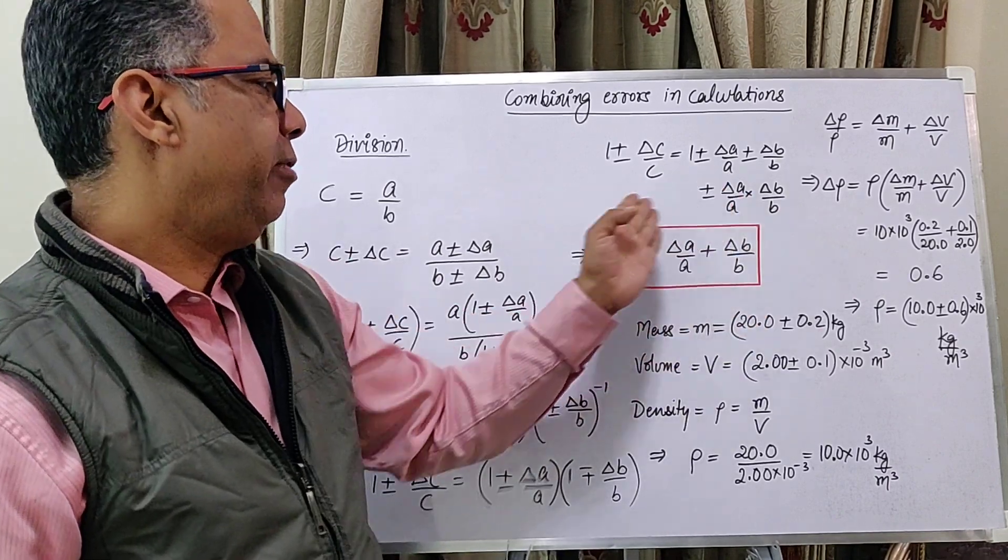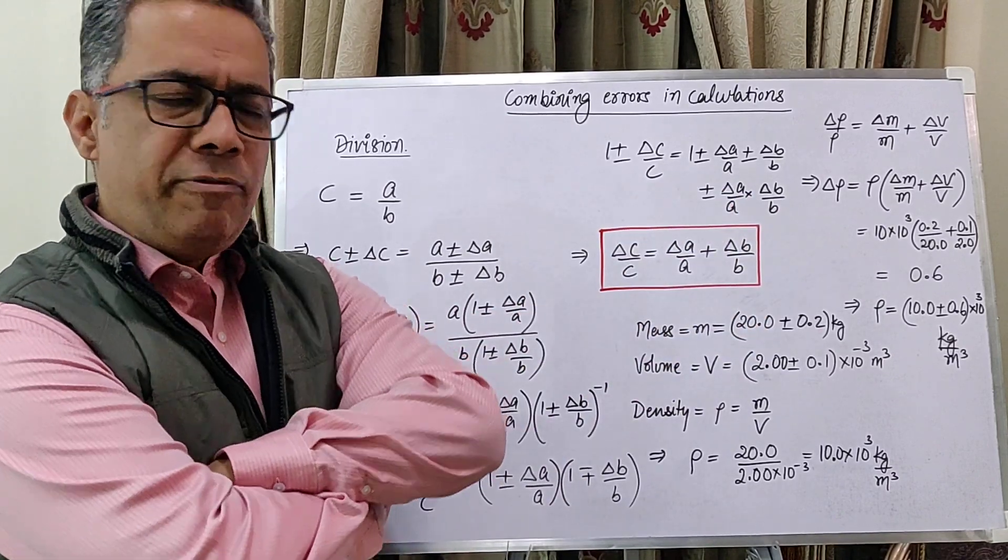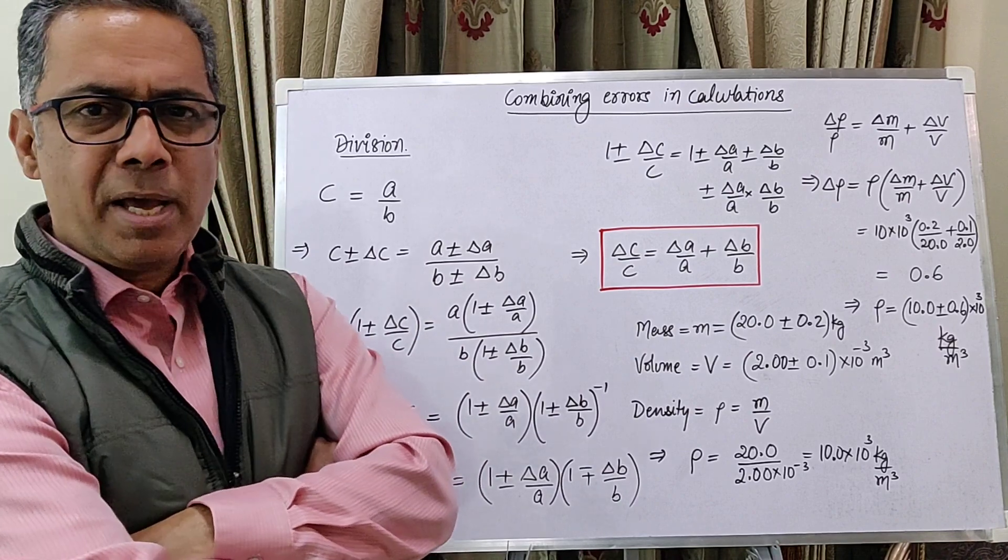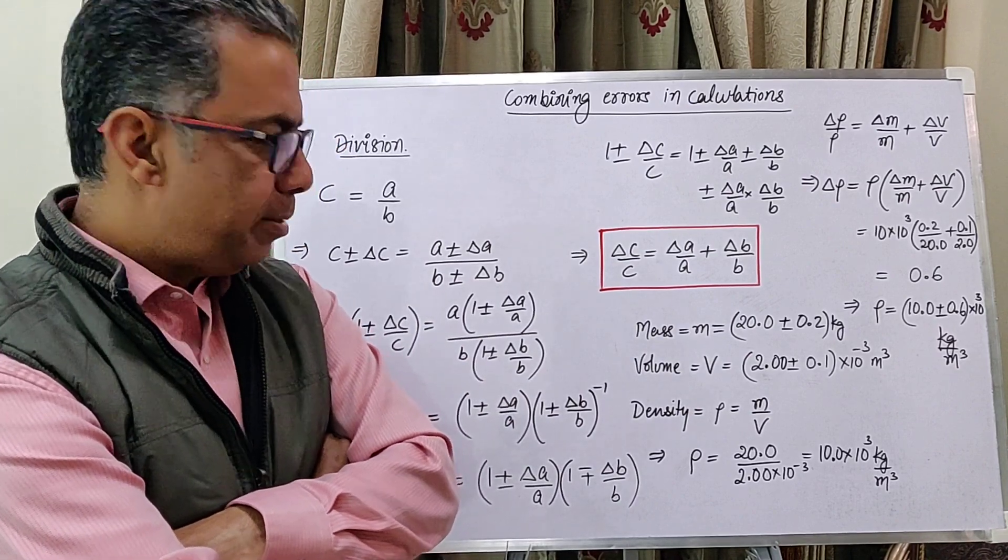So, finally, we notice that the rule for division is pretty much the same as the rule for multiplication.